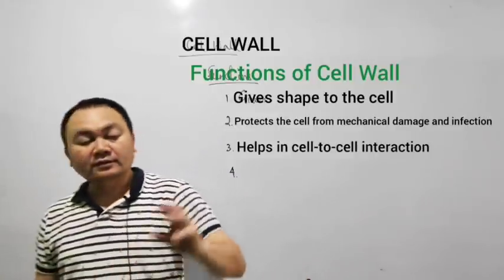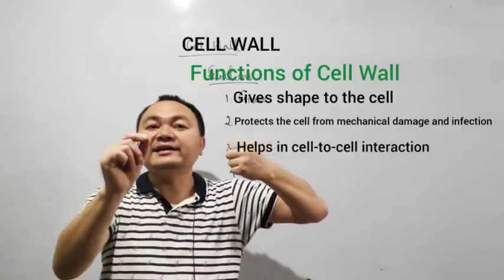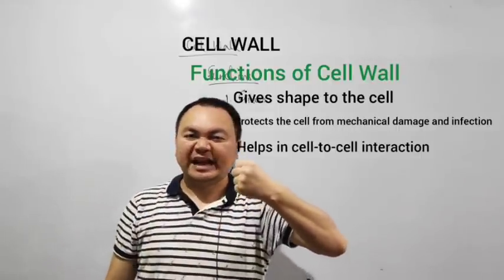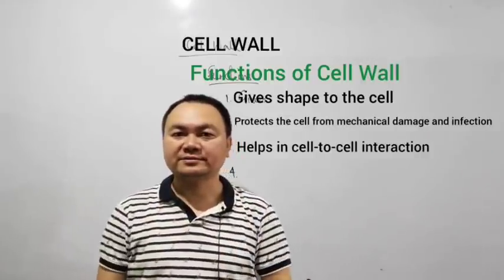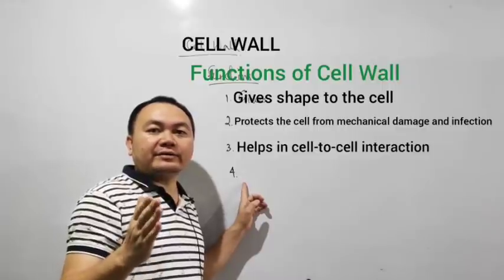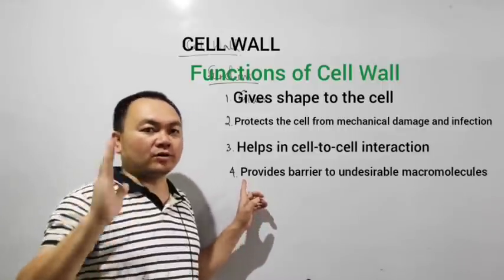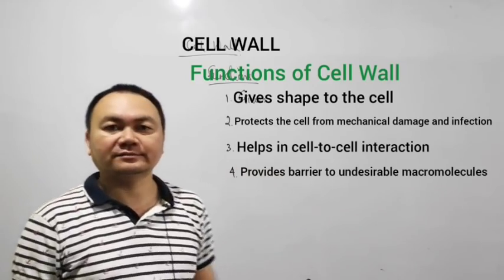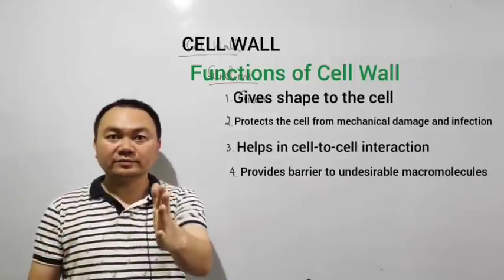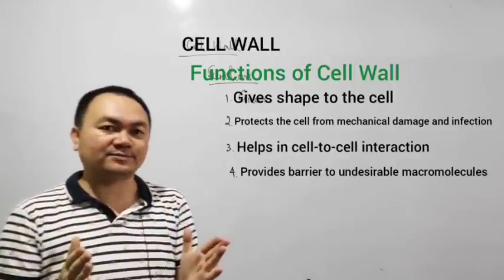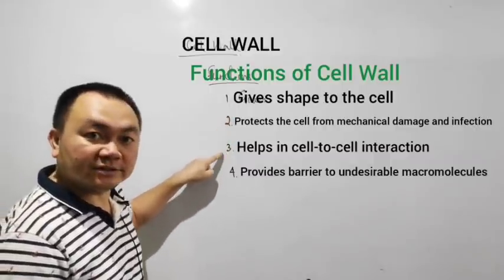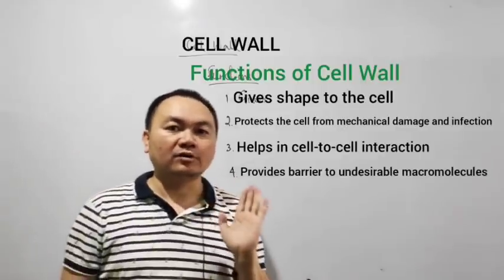Now what if any undesirable materials go inside the cell? The cell might get damaged. In order to prevent that, the cell wall is present. So the cell wall also acts as a barrier to undesirable macromolecules. That is the fourth function. So these are four functions given in our book.